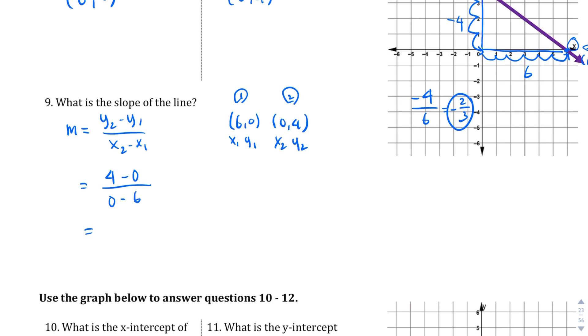Let's go ahead and plug these in. y2 is going to be 4 minus y1, which is 0. And then x2 is going to be 0 minus x1, which is 6. So if we go ahead and do that, 4 minus 0 is 4, 0 minus 6 is negative 6. And if we simplify that, sure enough, we do get the same answer, negative 2 thirds. So whether you do it algebraically or graphically, you should end up with the same answer.